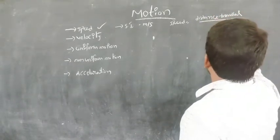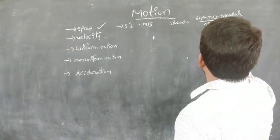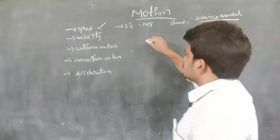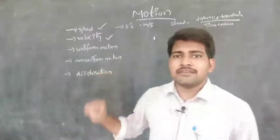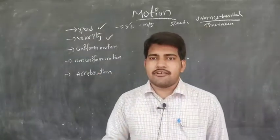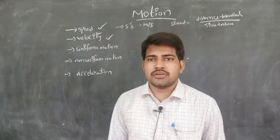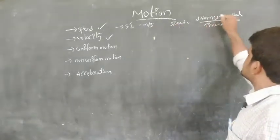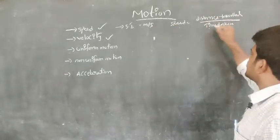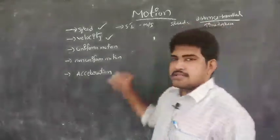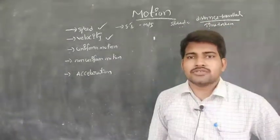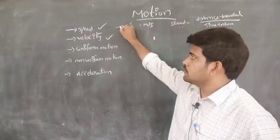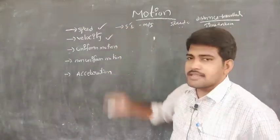Speed equals distance traveled divided by time taken. The speed of a body is the distance traveled by it per unit time. The SI unit is meter per second. Speed is a scalar — it has no magnitude and no direction, so it cannot be zero.